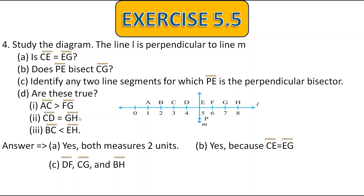Now let's check if these statements are true. First: AC is greater than FG. AC is two units and FG is one unit — so it is true. Next: CD is equal to GH. CD is one unit and GH is also one unit — so the second one is also true. Finally: BC is less than EH. BC is one unit and EH is three units — therefore the third statement is also true.